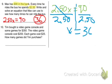Then Tim bought a video game console and some games for $350. So that's our total. The game console costs $200, and each game costs $25. How many games did Tim purchase? So the console is $200. He's only going to buy that once.